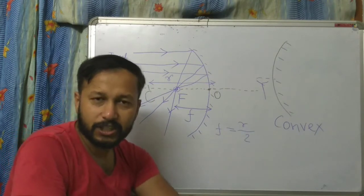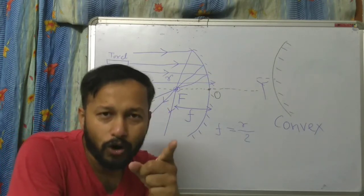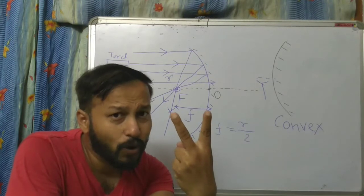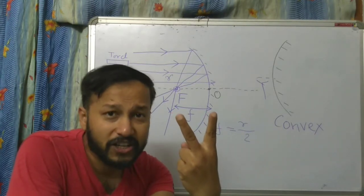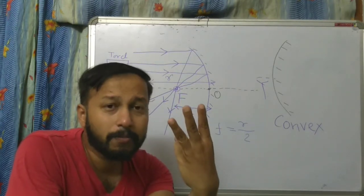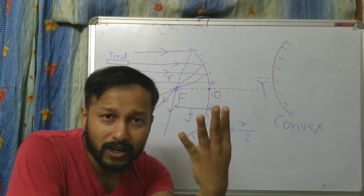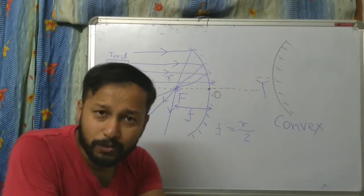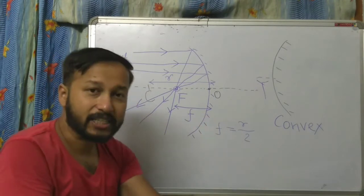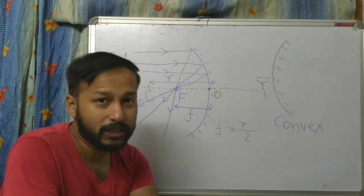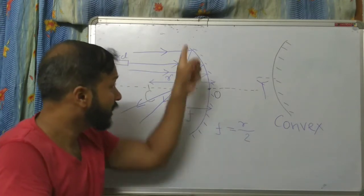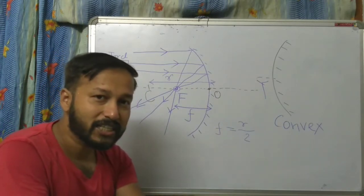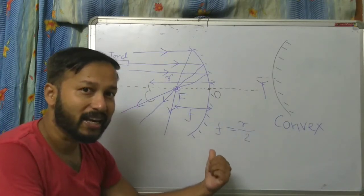So the terms we discussed for the concave mirror are: number 1 — pole or optical center; number 2 — center of curvature; number 3 — principal axis; number 4 — radius of curvature; number 5 — focus point; number 6 — focal length; and also aperture.